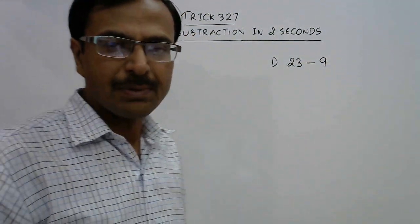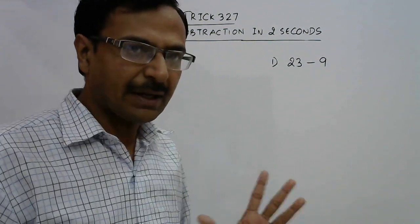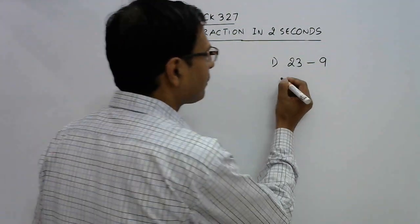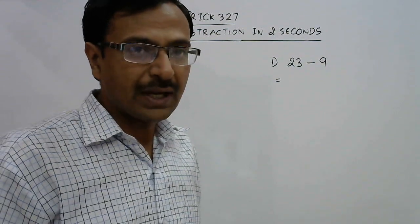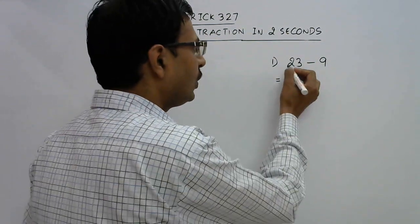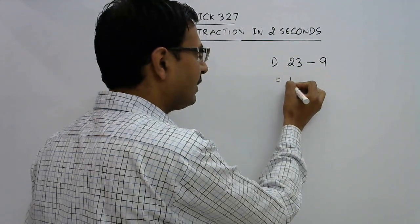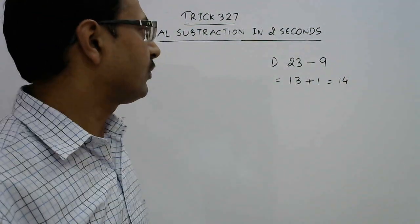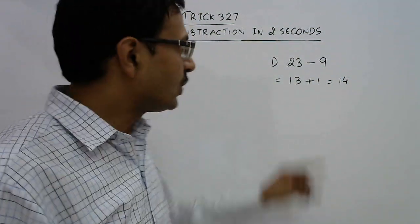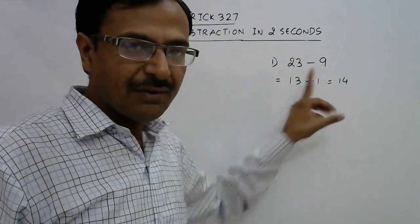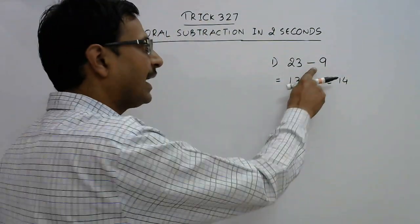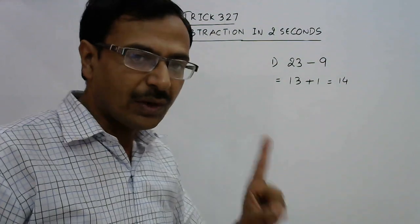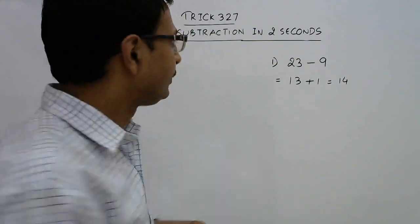A very easy example — most of you must have guessed the answer by now. But how do we carry out this calculation in mind? Whenever we have to subtract 9 from something, you don't actually subtract 9 — you reduce by 10, it becomes 13, and just add 1. Your answer of 23 minus 9 is 14. We do this because 9 is very close to 10, so instead of subtracting 9, you subtract 10 — one more than 9 — and add back that 1 which you subtracted in excess.